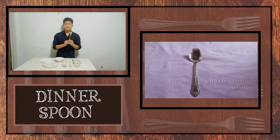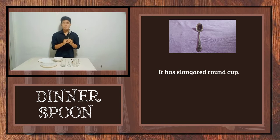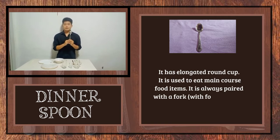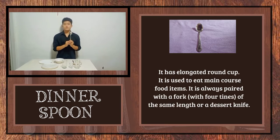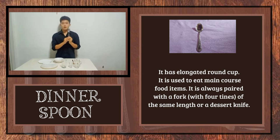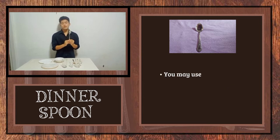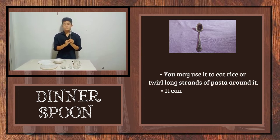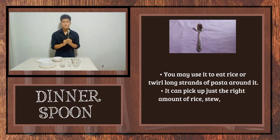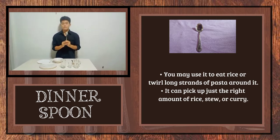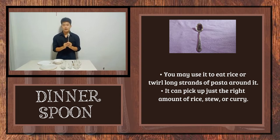The last example of tableware is the dinner spoon. It has a rounded cup and is used to eat main course food items. It is always paired with a fork of the same set or a dessert knife. You may use it to eat rice or twist long strands of pasta around it, and it can pick up just the right amount of rice, stew, or curry.